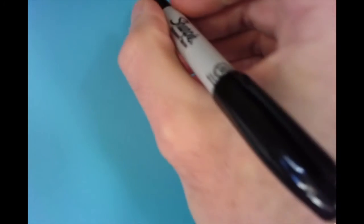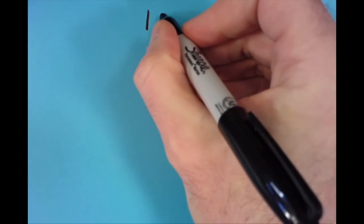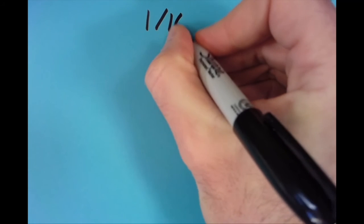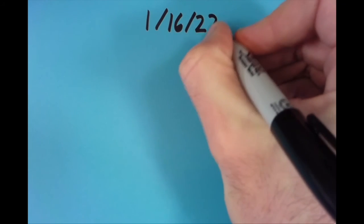Now, tomorrow's date is this: it's the 16th of January. So that gives us 1, 16, 22. And so see how many different ways you can make an equation by using the digits in this date in order.